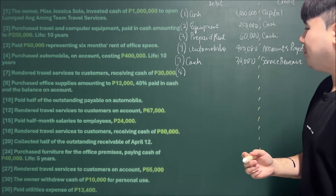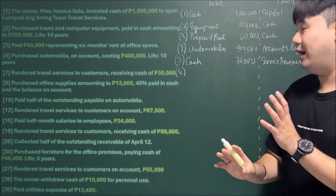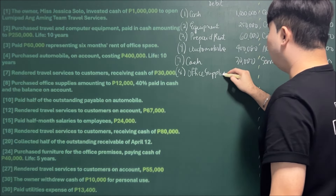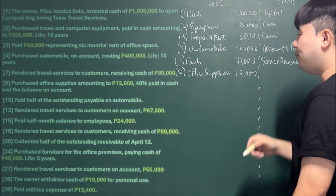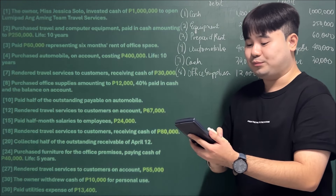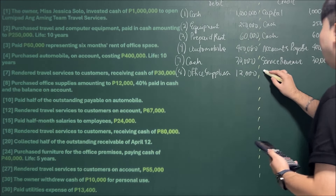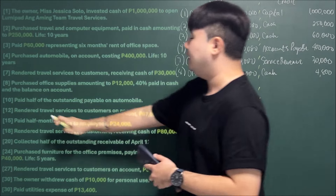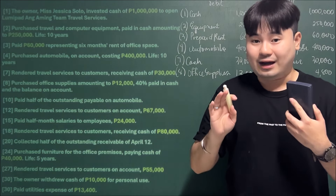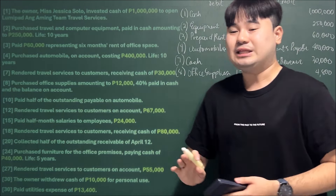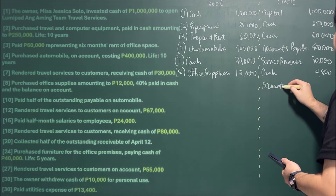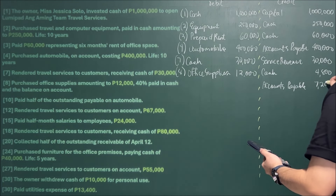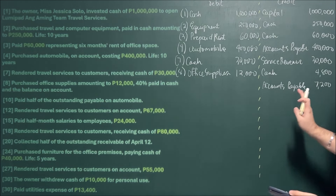April 8: Purchased office supplies amounting to 12,000 — 40% paid in cash, the balance on account. We debit Office Supplies for 12,000. The cash paid is 40% × 12,000 = 4,800, so we credit Cash for 4,800. The remaining 60% (7,200) is still unpaid, so we credit Accounts Payable for 7,200.